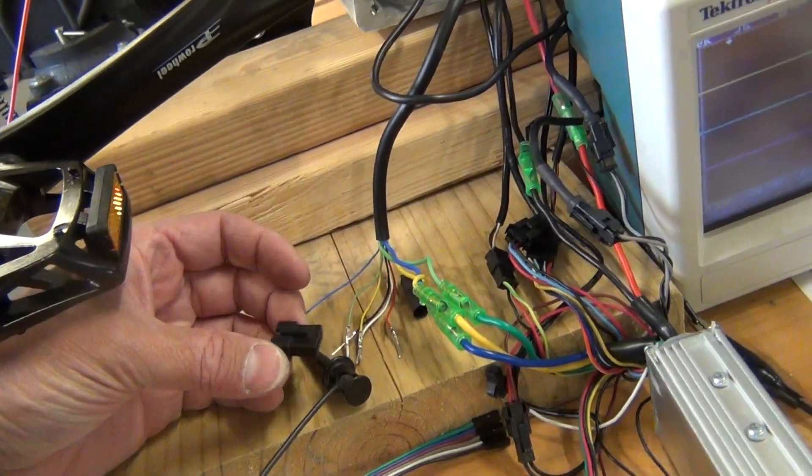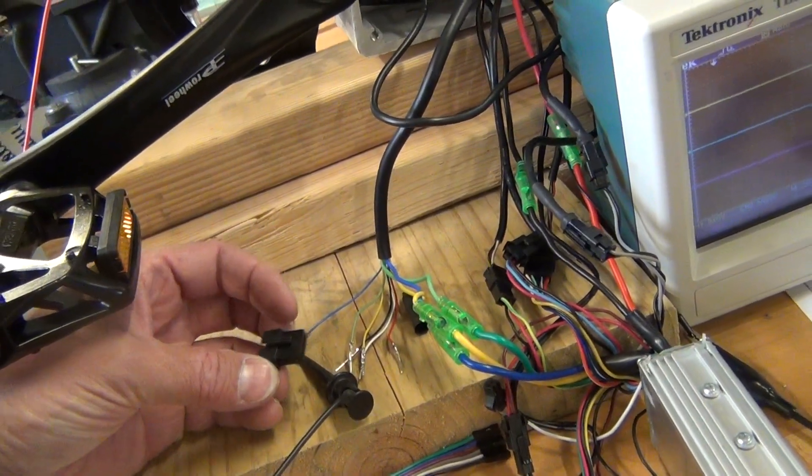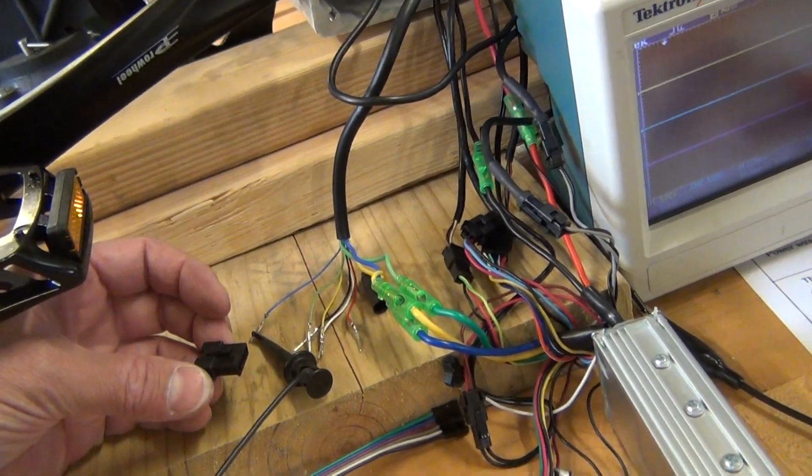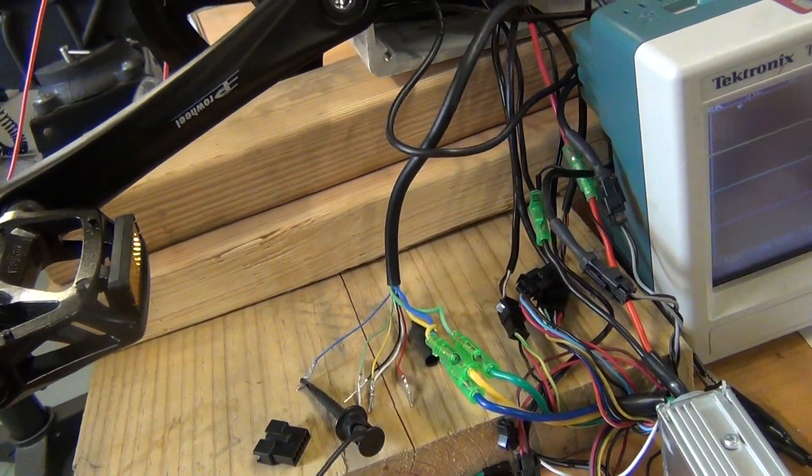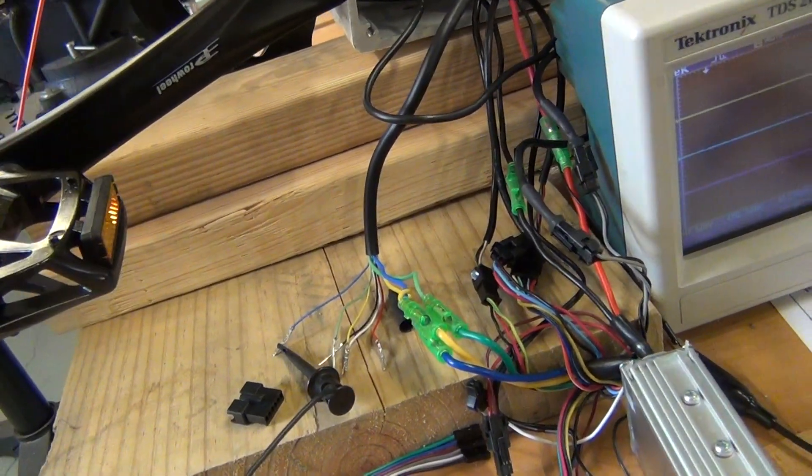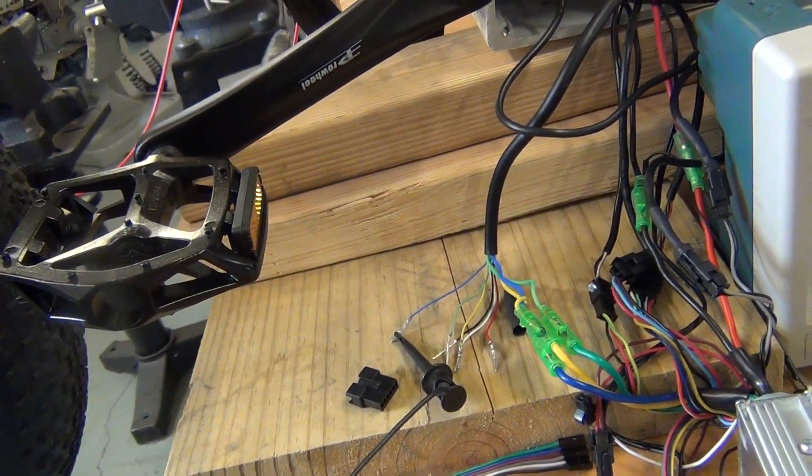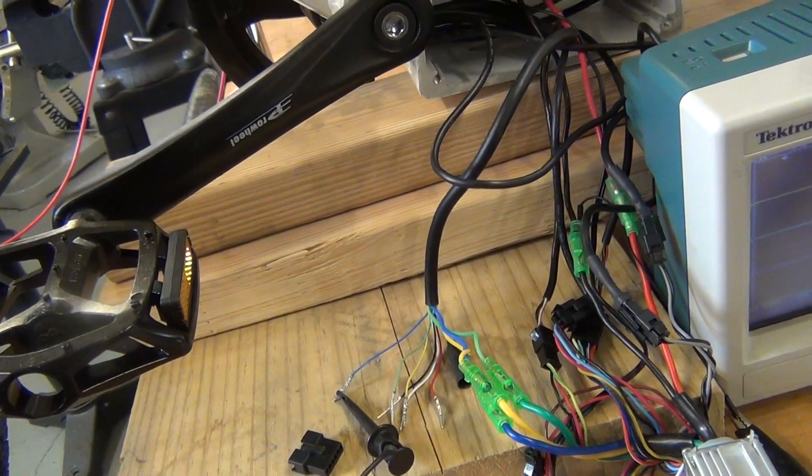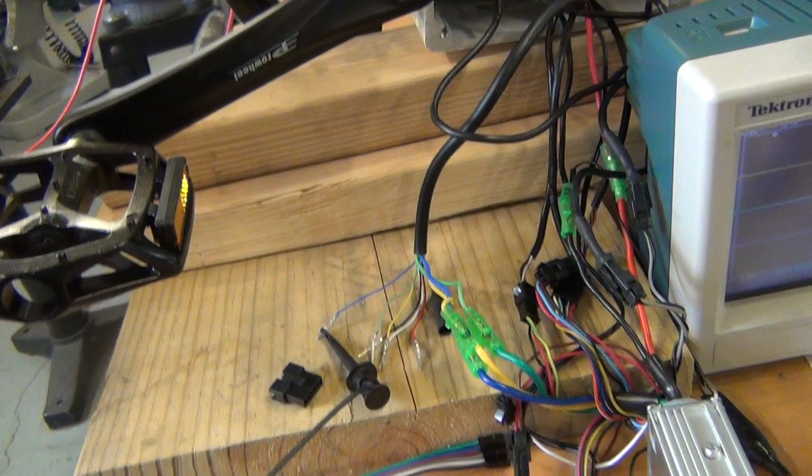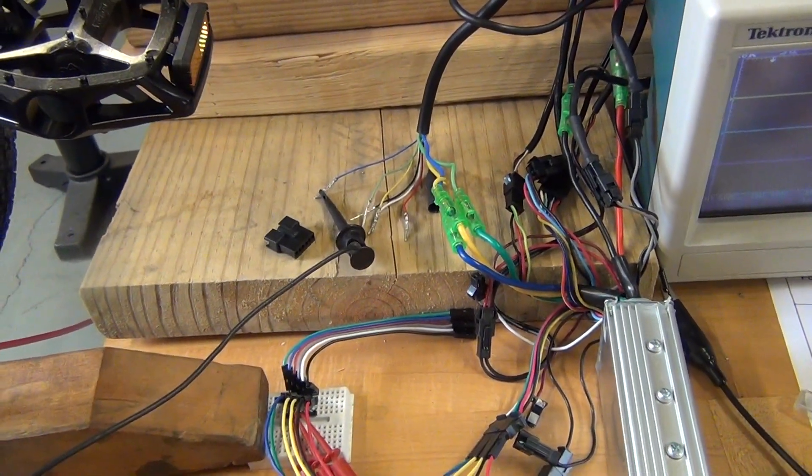So there's three Hall Effect signals. Probably 120 degree spacing on the motor wheel shaft position. And there's a black and a red wire, which is ground and plus five. And then a yellow, green and blue wire, which are the three Hall Effect signals. And I'm pretty sure the white wire does nothing.